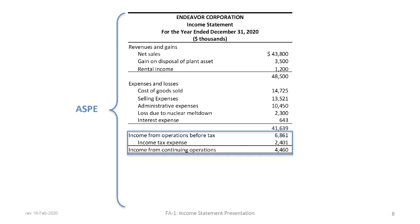Once all revenues and expenses are presented, we calculate net income from continuing operations before income tax. Revenues and gains of $48,500,000 less expenses and losses of $41,639,000 gives us income from continuing operations before tax of $6,861,000. The applicable income tax rate is 35%, so 35% of $6,861,000 is $2,401,000, leaving us with income from continuing operations of $4,460,000.